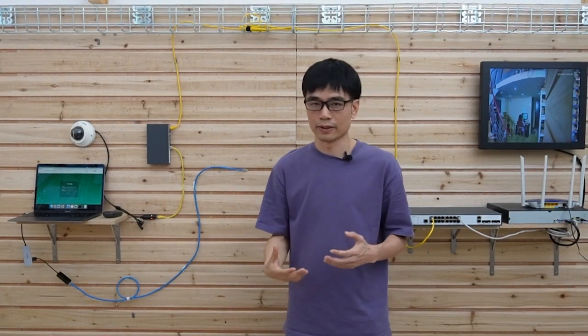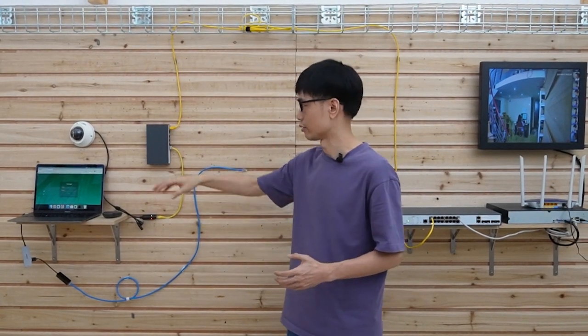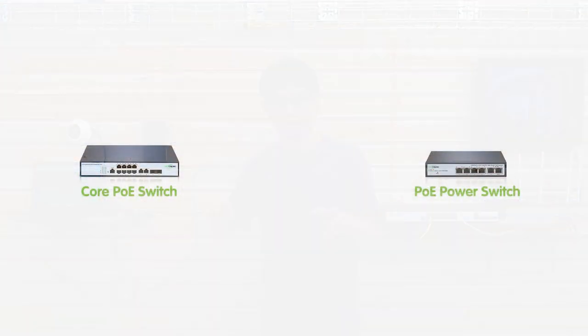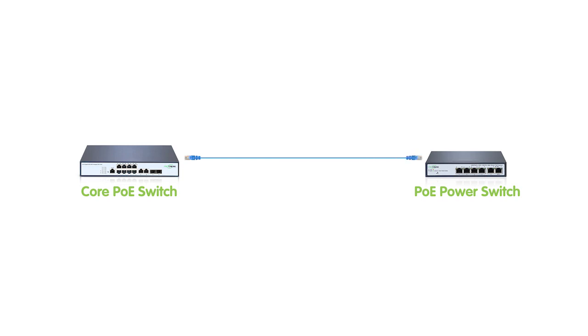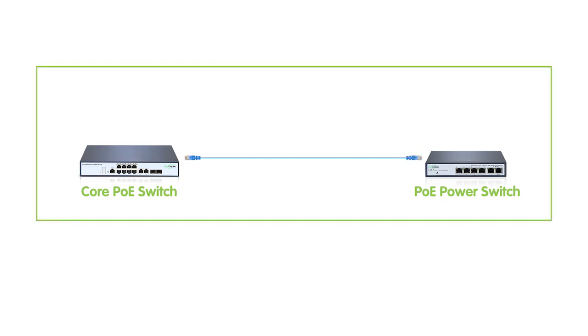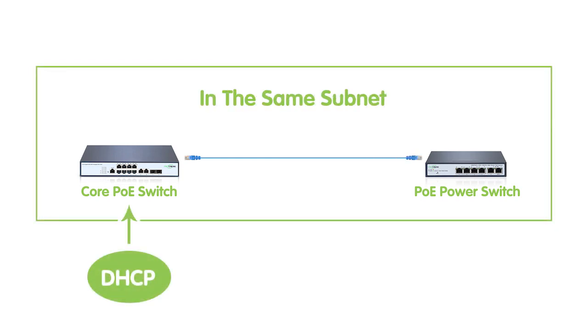So how can we get the DHCP function using this kind of edge switch? In the same subnet, we typically maintain only a single DHCP server — in our case, that will be the core switch.